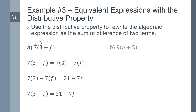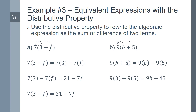Now for part b: 9 times (b plus 5). This becomes 9 times b plus 9 times 5. Since 9 times 5 is 45, our expression is now 9b plus 45.